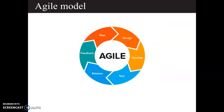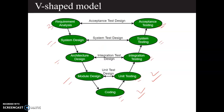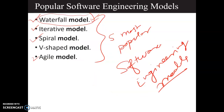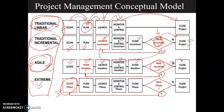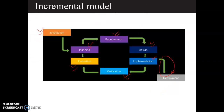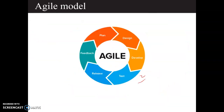The last model is the agile model, which I already explained. It enables you to update your plan based on feedback. The phases are: planning, then design, develop, testing, release, and then collect feedback. Based on the feedback you can update your plan and update the system accordingly.